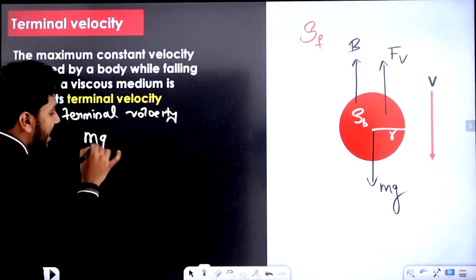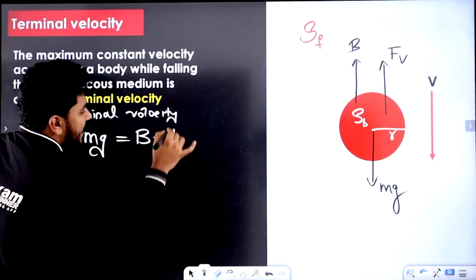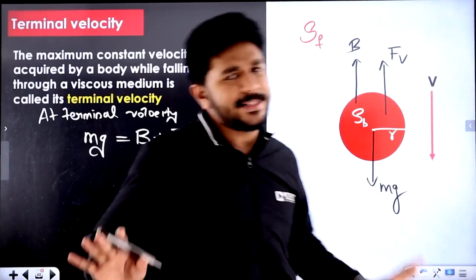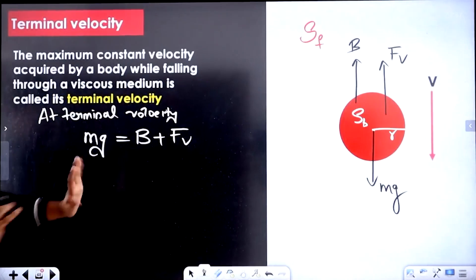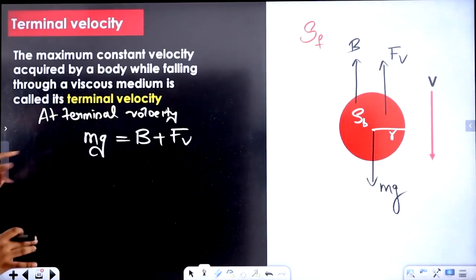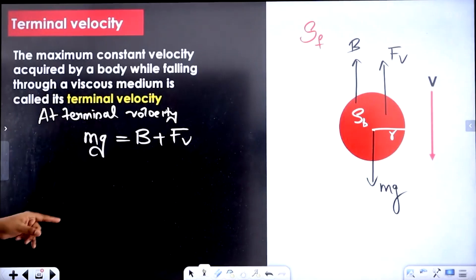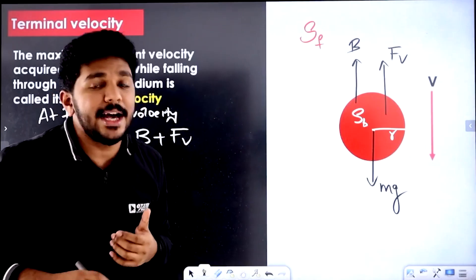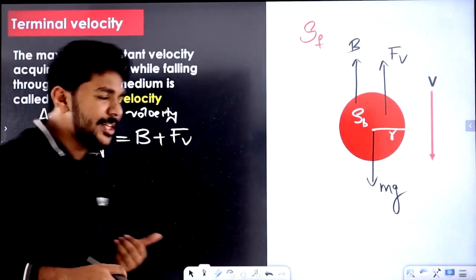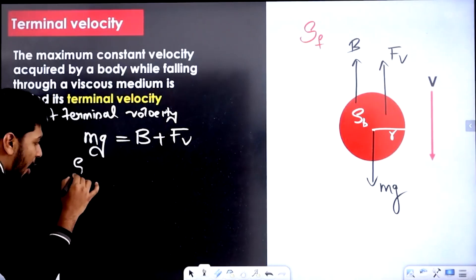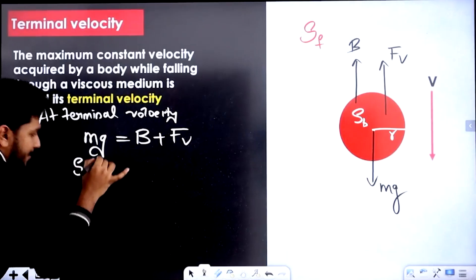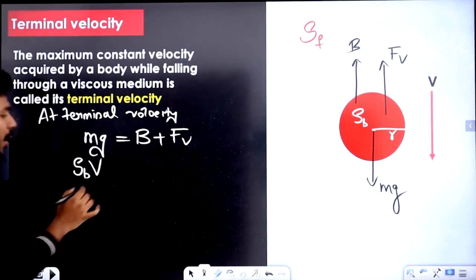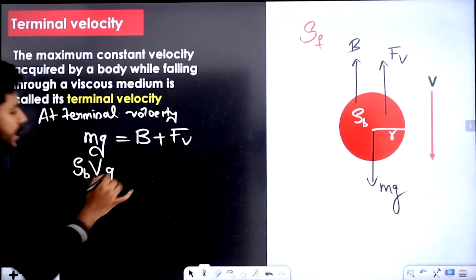Mg will be balanced by Fv plus buoyant force. Mg will be balanced by buoyant force plus viscous force. Now we can substitute a little bit. Mg means mass into g. We can use density into volume. Density is equal to mass by volume, so mass is equal to density into volume. Density of ball into volume of ball — density of ball into volume of ball into g.